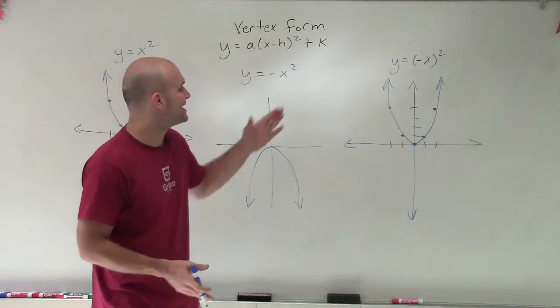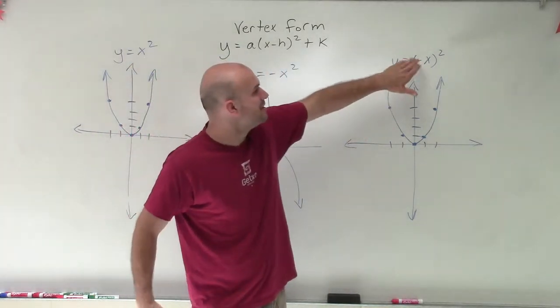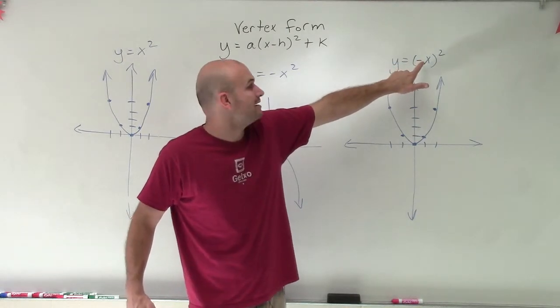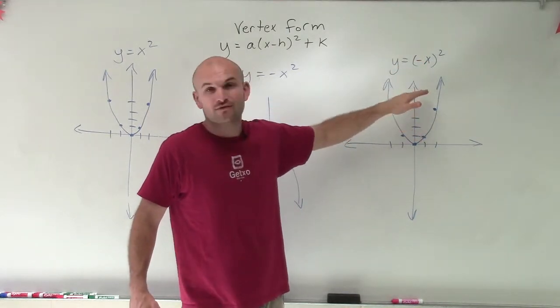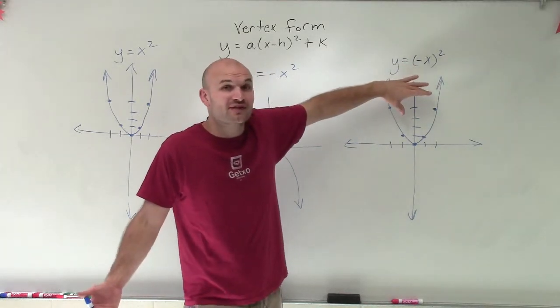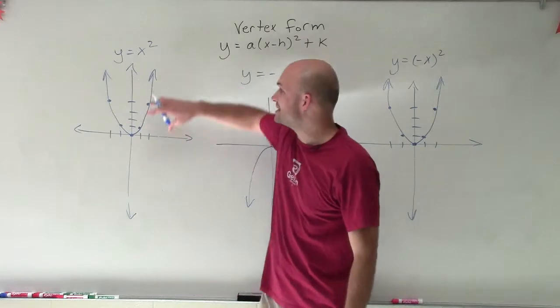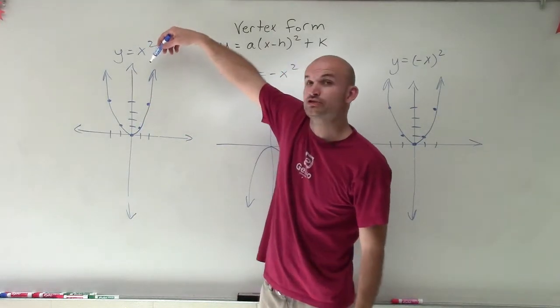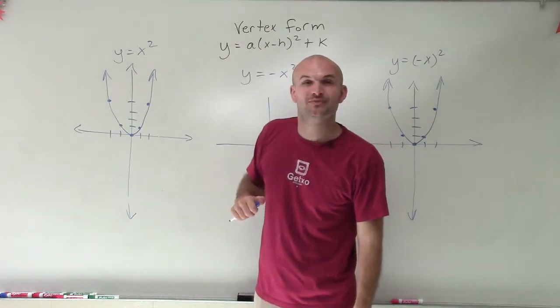So there you go. Wanted to make a quick little video on that so you guys can understand. When you multiply by a negative number inside the function, it's going to be a reflection over the y-axis, which for a quadratic, since it's already reflected about the y-axis, in this case with no other transformation, is going to be exactly the same as your parent graph. Thanks.